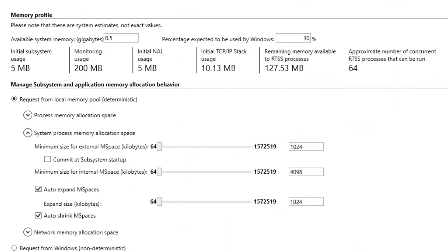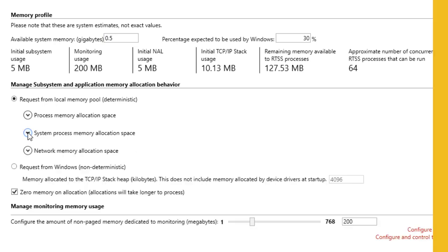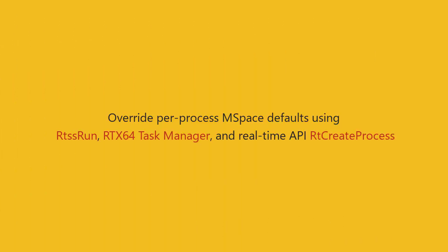RTX 64 tools RTSS Run, Task Manager, and the real-time API RT-CreateProcess include functionalities that can override mspace defaults on a per-process level. See the Help for more information.